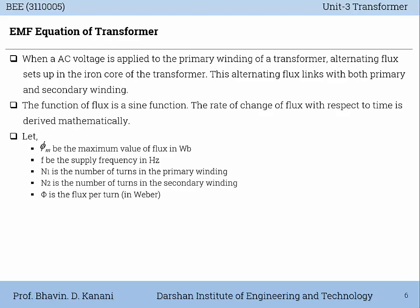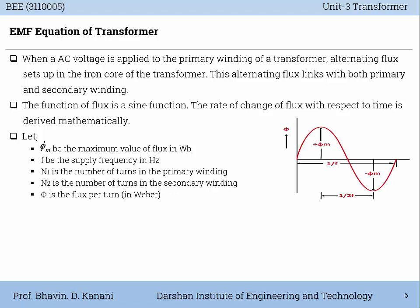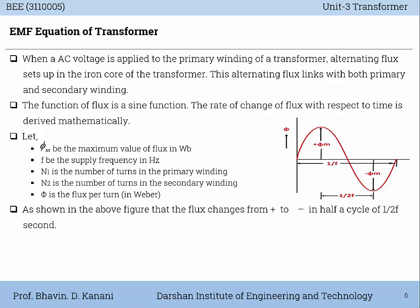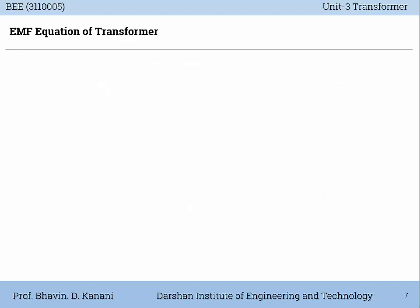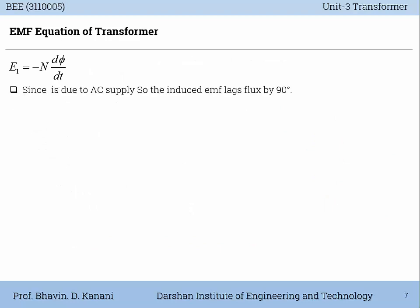Let Φm be the maximum value of flux in Weber, small f be the supply frequency in Hertz, N1 be the number of turns in the primary winding, N2 be the number of turns in the secondary winding, and Φ be the flux per turn in Weber. Considering the waveform of sinusoidal flux, the flux changes from positive to negative in a half cycle of 1/2f seconds. By Faraday's law of electromagnetic induction, let E1 be the EMF induced in the primary winding. Then E1 is equal to minus N dΦ/dt. Since it is due to AC supply, the induced EMF lags the flux by 90 degrees.